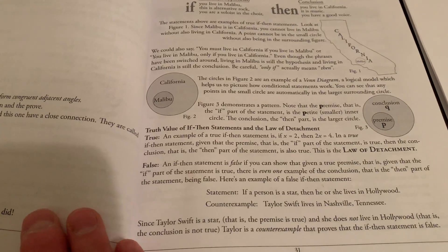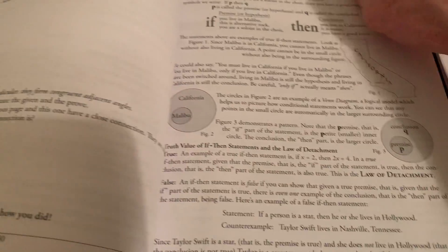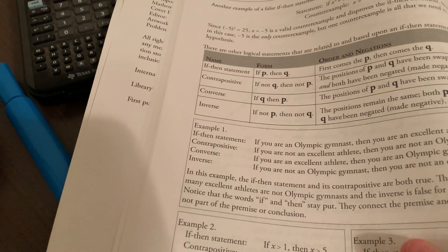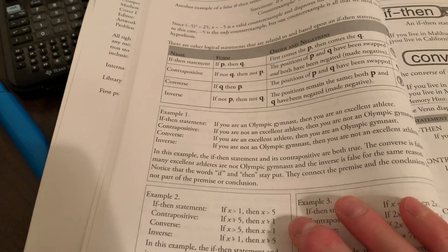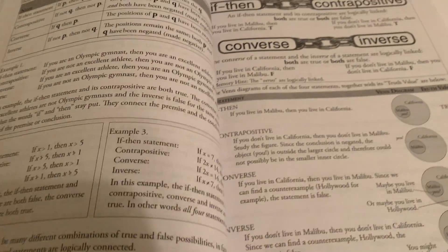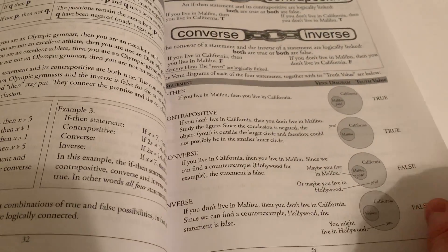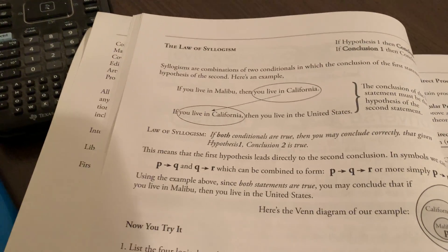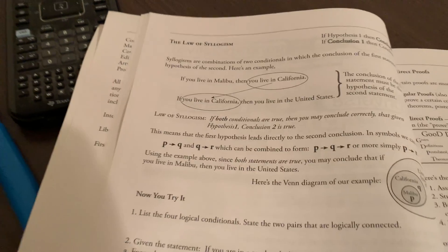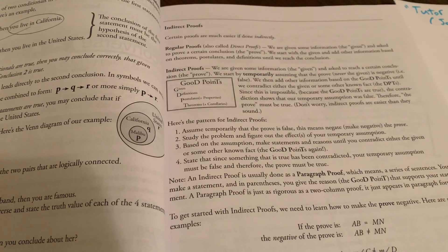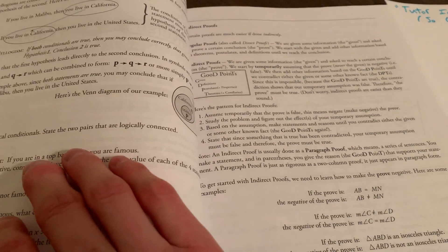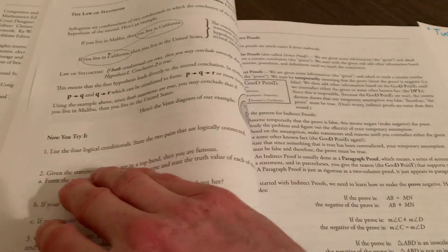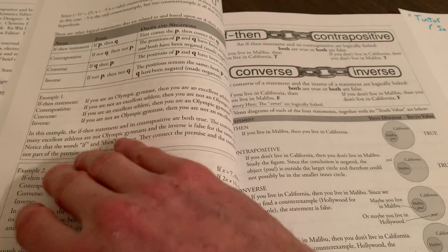Then it gets into the so-called law of detachment. And then we get into contrapositives, converses, inverses, and some examples. That continues on this page. But also, we have the law of the syllogism, which is really a hypothetical syllogism. And then we get into indirect proofs, which are really cool. These are very basic, but they're still interesting to think about. So let's just go through some of this, and I'll show you my notes.